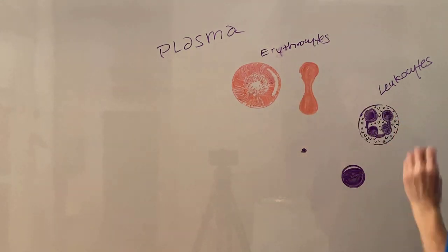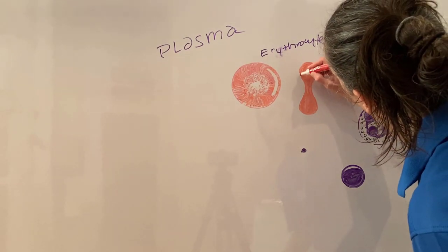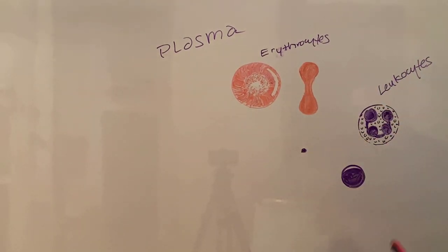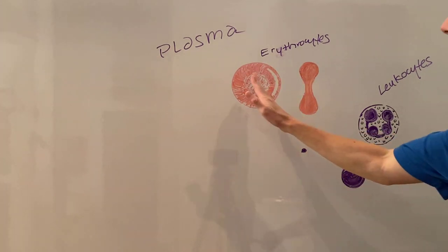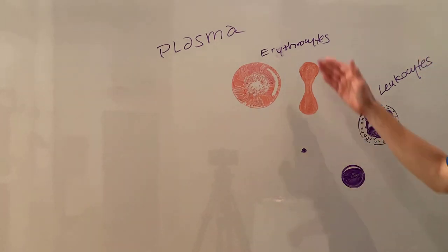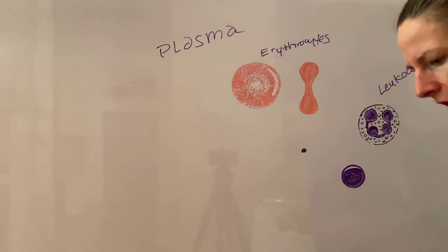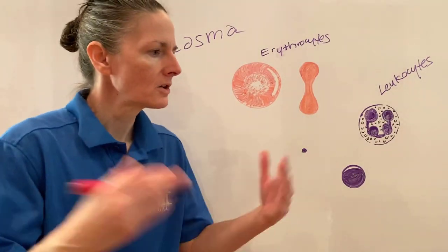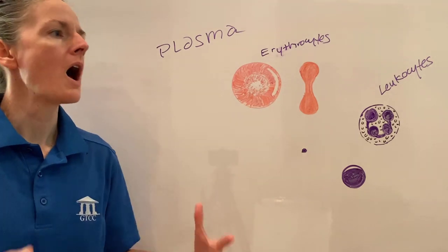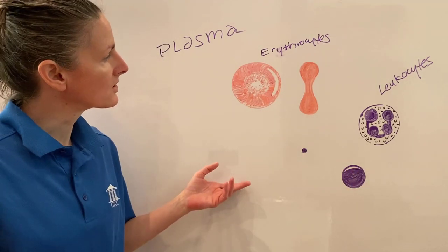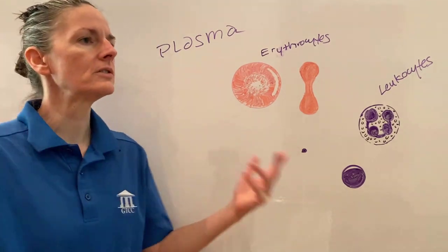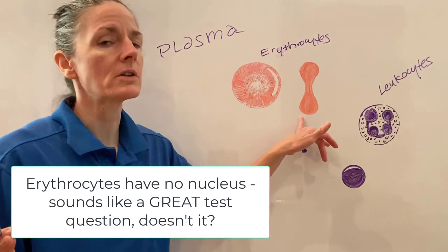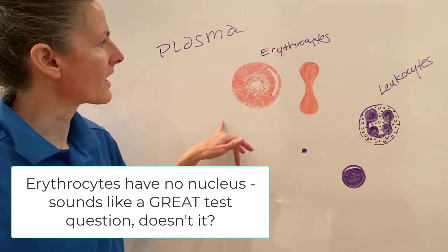Red blood cells have what we call a biconcave shape, meaning they are curved inward at the middle. In cross section they look like little dumbbells, and viewed from the top they almost look like little donuts — except they are not entirely hollow in the center, just very thin. This increases surface area, which is important because their job is to carry oxygen to tissues. They become so specialized for this function that they lose most of their cellular organelles.